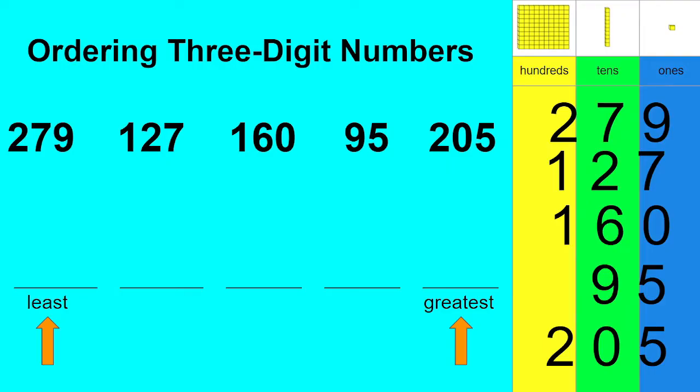Let's look in the yellow column or the 100s place. We're looking for the least or the smallest number. Would it be one that has two groups of 100 or one group of 100 or no groups of 100? Let's take a look. 95 doesn't even have a group of 100. That means it is the smallest or the least.